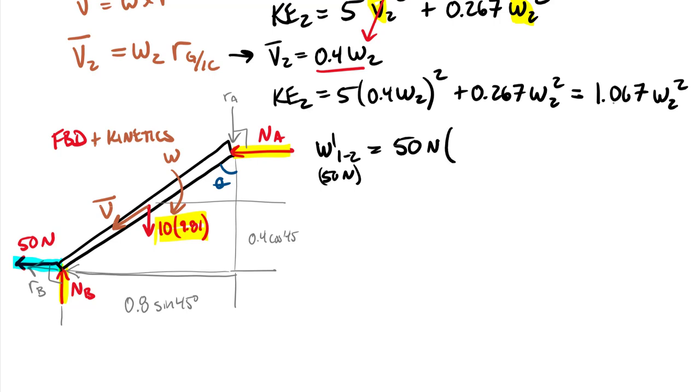We can write W prime from 1 to 2 of this 50 Newton force equals the 50 Newton force times a distance of 0.8 times sine of 45 degrees. You always need to answer on a work term, is this positive or negative? This is positive because our displacement of point B from here to this location is in the direction of that force. Let me put a note that this is positive work because we have force in the direction of displacement.